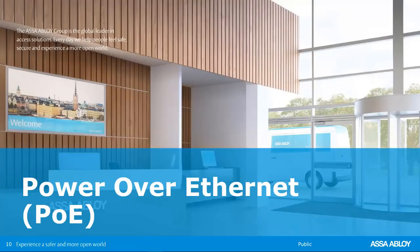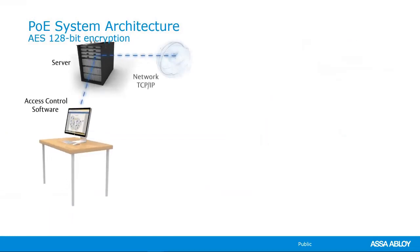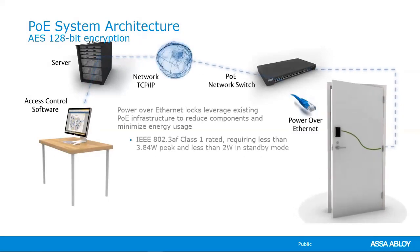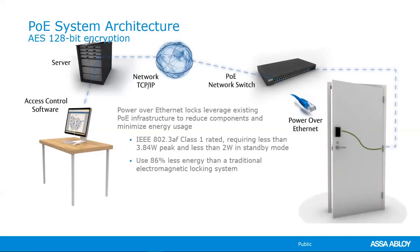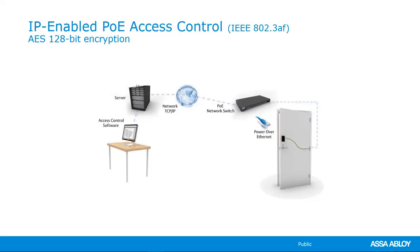Next, we're going to talk about Power over Ethernet. Power over Ethernet is typically a new construction installation. As you can see here from the system architecture, you're going to have that access control software and that network capability. But the difference here is this is actually using Power over Ethernet — your power and your data are being transferred through that CAT6 cable. So now you're just plugging that right into your network switch. Like the Wi-Fi lock, AES 128-bit encryption is covered for all communication paths through the life of the system.